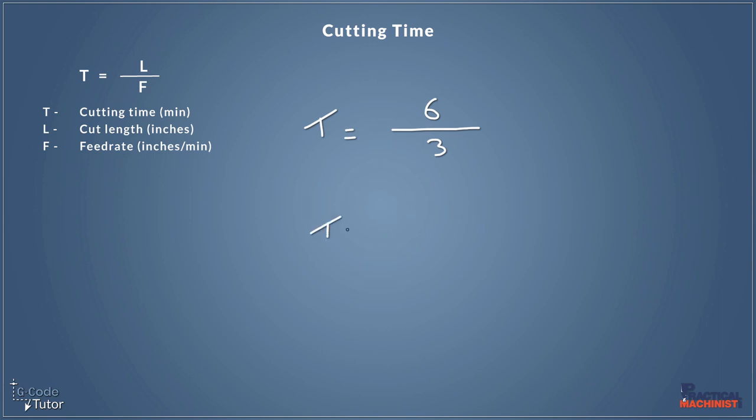So T would equal two minutes exactly. Now if we wanted that in seconds again, we would just times the answer by 60. And that would give us 120 seconds, two minutes.